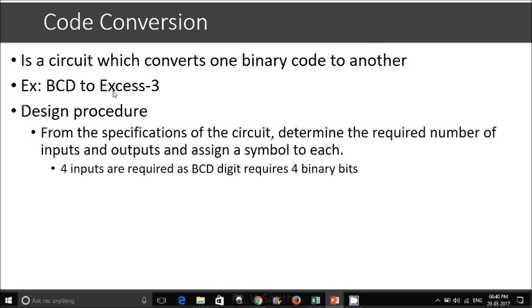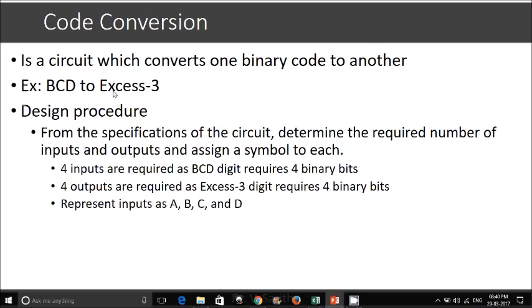The number of inputs will be 4 bits because binary BCD digit takes 4 bits. XS3 also will be taking 4 binary bits. So we say that 4 outputs is required in this converter. Let us represent the inputs of this code converter which converts from BCD to XS3 as ABCD and outputs as WXYZ.